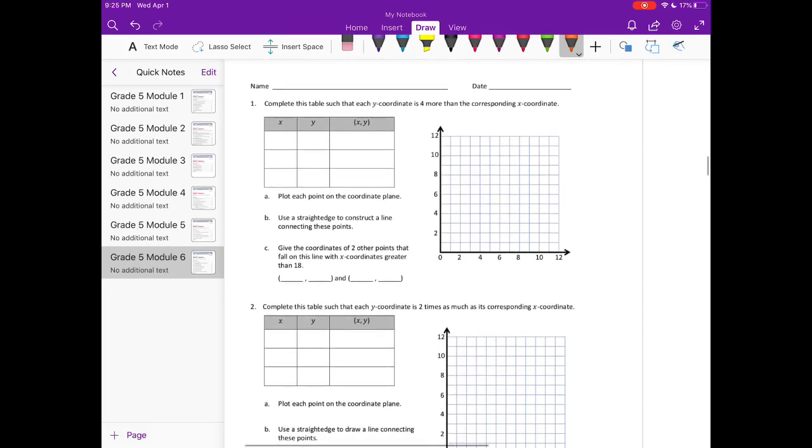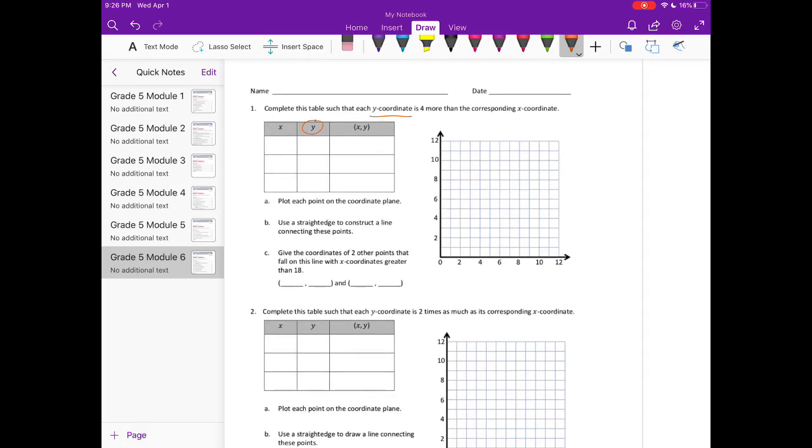Complete this table such that each y-coordinate is 4 more than the corresponding x-coordinate. So the y-coordinate is 4 more than the x-coordinate. For example, if my x-coordinate was 0, then my y is 4 more, so we're doing plus 4.